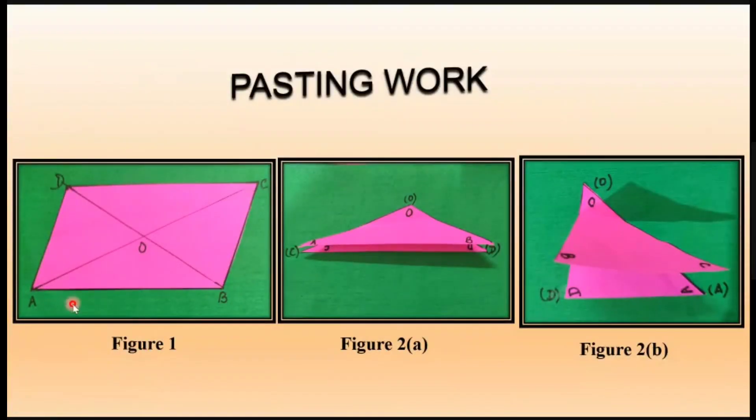Just have a look at the pasting work. As I told you in the procedure, the first figure will be a parallelogram and the diagonals are going to be drawn, AC and BD, intersecting at point O. In the second figure, I'm going to cut out the triangles AOB, BOC, COD, and AOD.